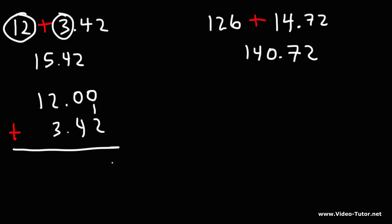So here we have 0 plus 2, which is 2. 0 plus 4, that's going to be 4. And then 2 plus 3 is 5. And then we can bring down the 1. So we get 15.42.